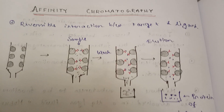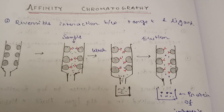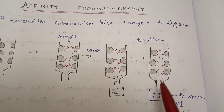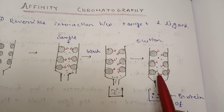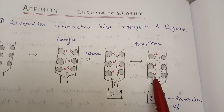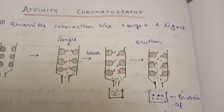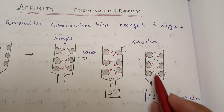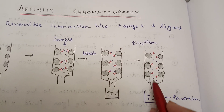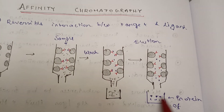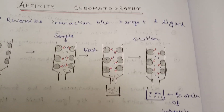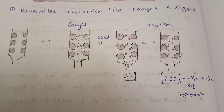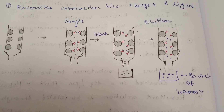Similarly, in another type of affinity chromatography, you can add some counter molecule which has the same affinity for that ligand. The new molecule will attach to the ligand and the protein of interest will be eluted, and you can have your protein of interest. This is the core idea of affinity chromatography.